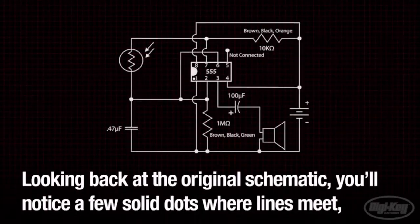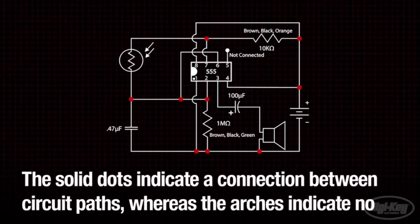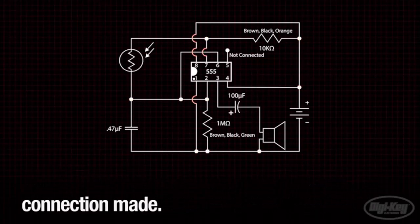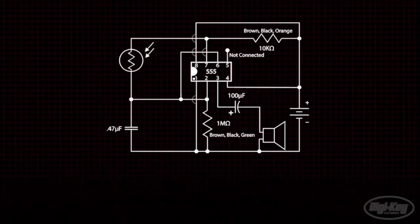Looking back at the original schematic you'll notice a few solid dots where lines meet and also a few arches. The solid dots indicate a connection between circuit paths whereas the arches indicate no connection made. Occasionally you'll see lines that intersect with no arches or dots. This is also to be read as no connection made. Let's go over